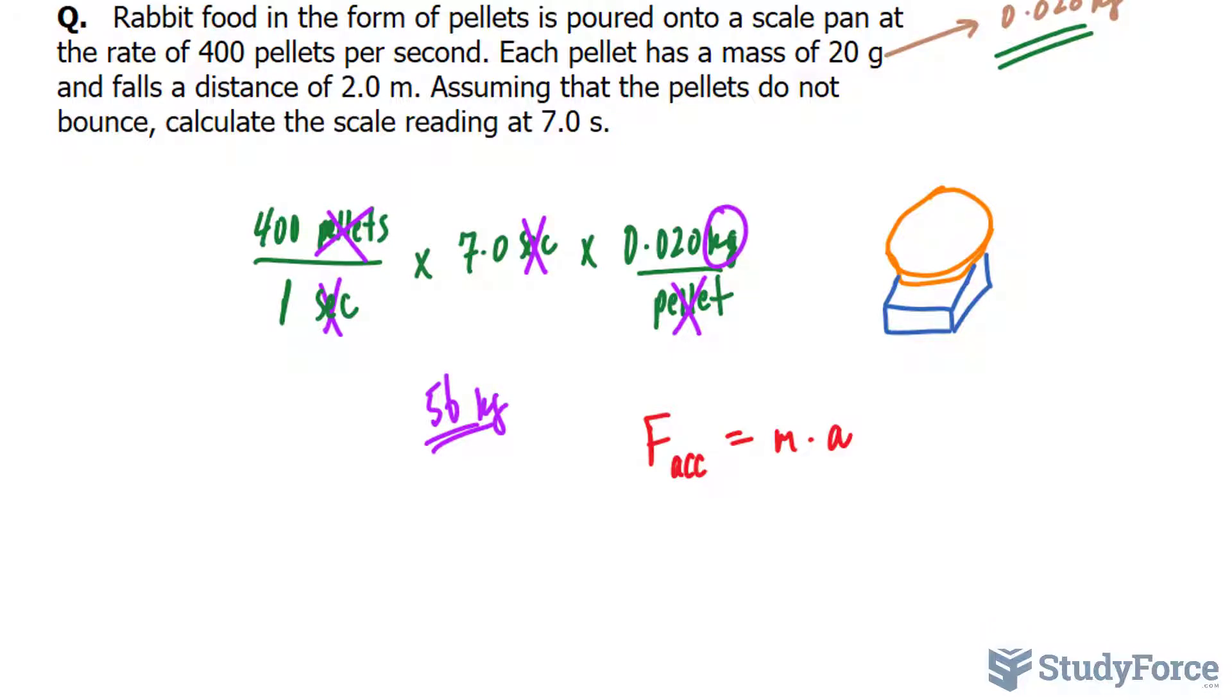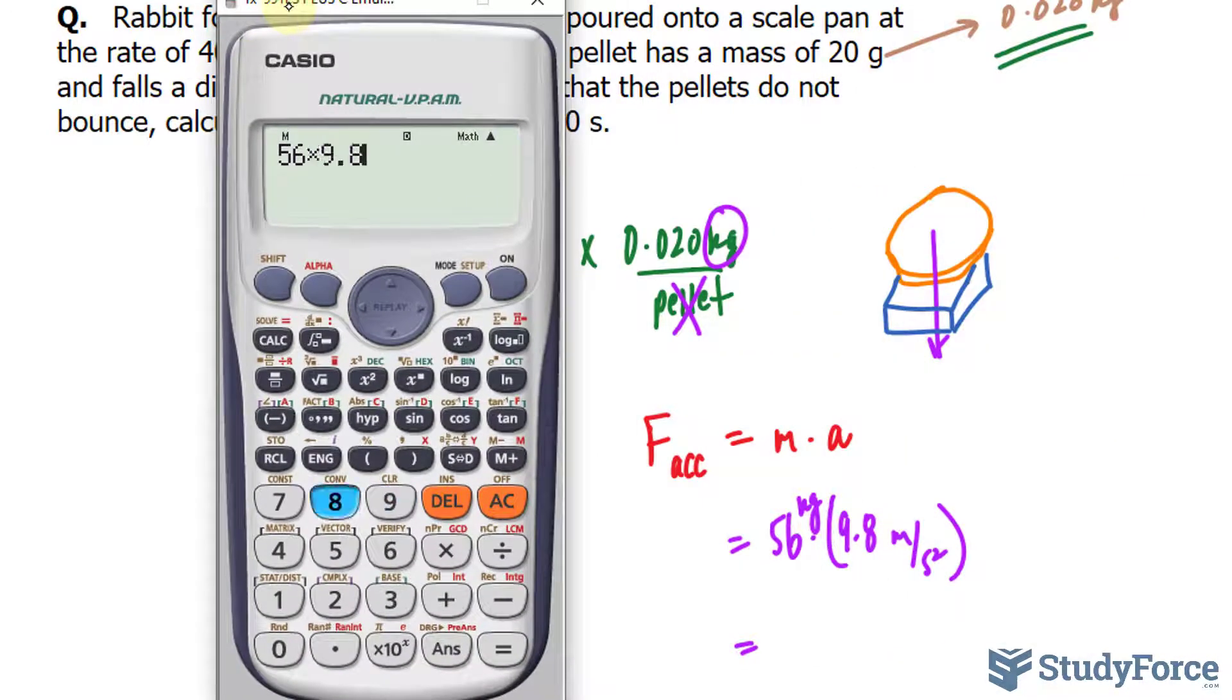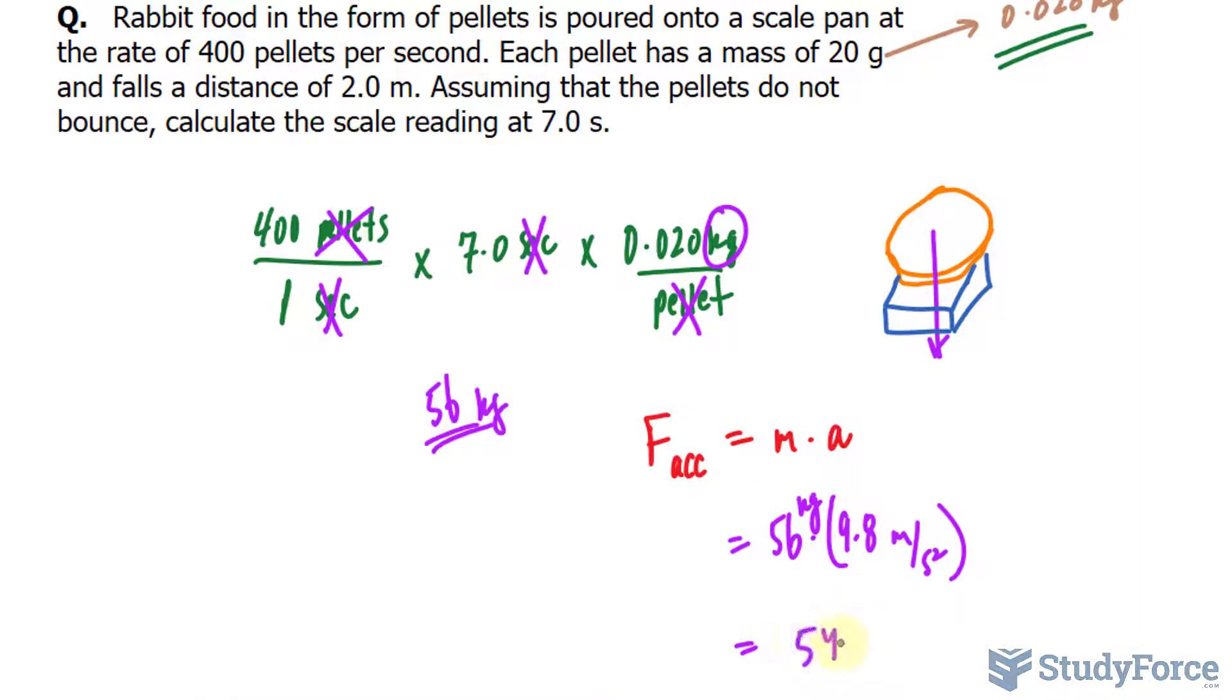So how much is gravity pulling downwards towards the scale? The mass is 56 multiplied to 9.8. Remember it's 56 kilograms and it's 9.8 meters per second squared. Together this makes newtons.